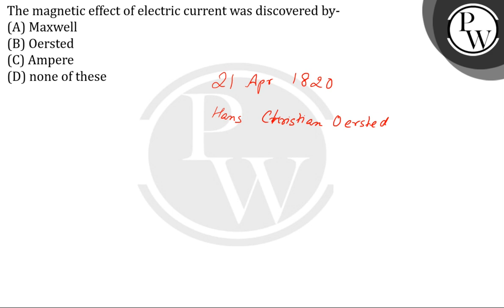a wire carrying current rotated perpendicular to the wire. After this observation, he was the one to discover the magnetic effect of electric current. So the correct answer is option number B, Ørsted. Thank you.